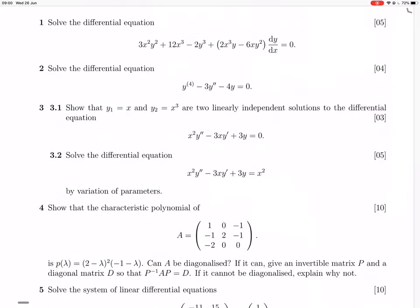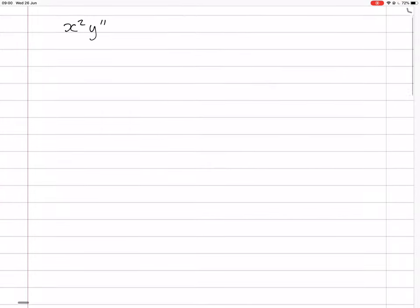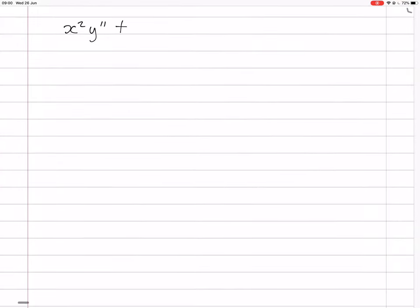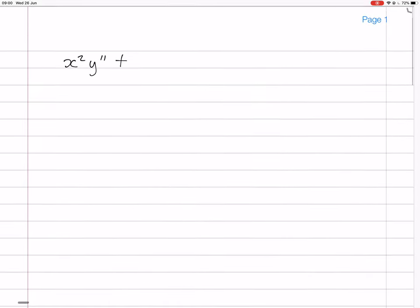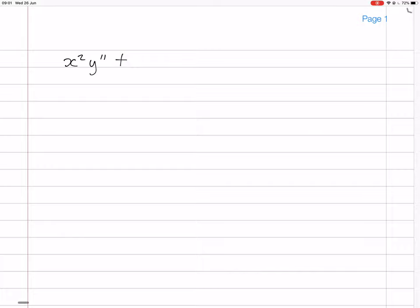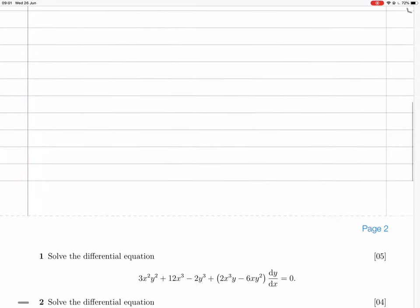So, what's it? x squared y dash dash. We have x squared y dash dash, plus... oh, minus 3xy dash, minus 3xy dash, plus 3y equals 0.